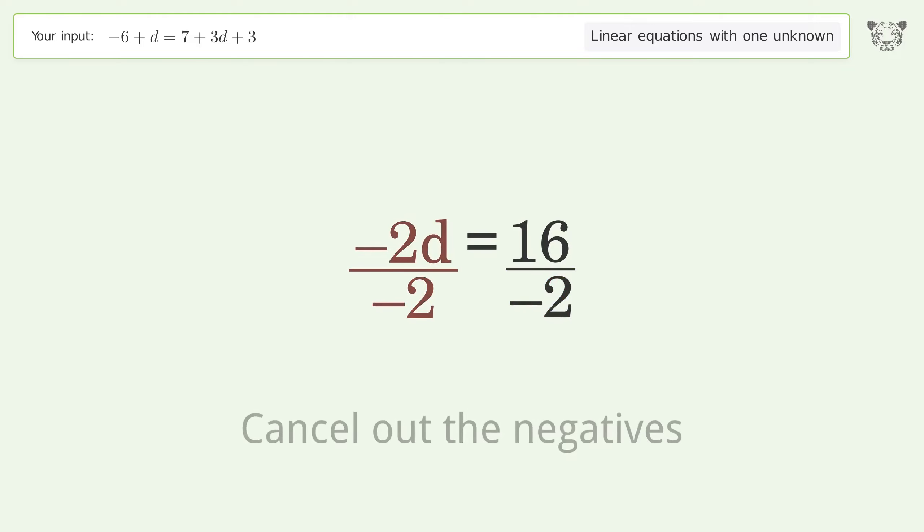Isolate the d. Divide both sides by negative 2. Cancel out the negatives.